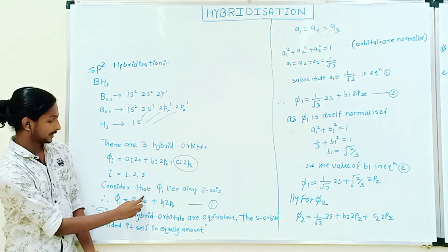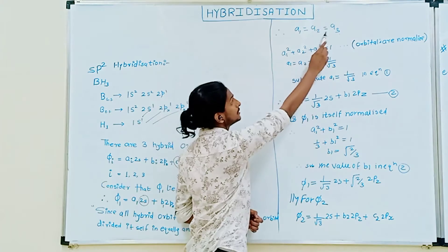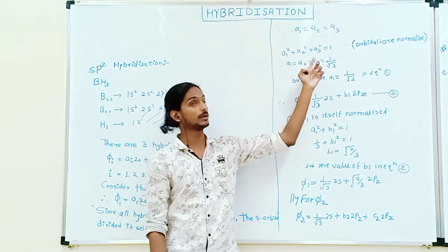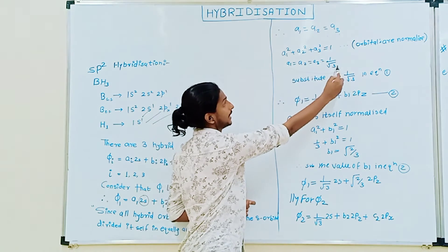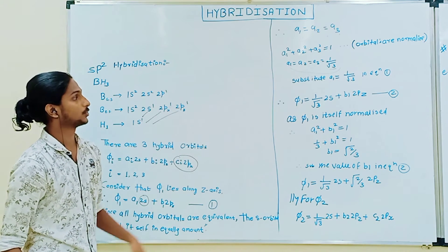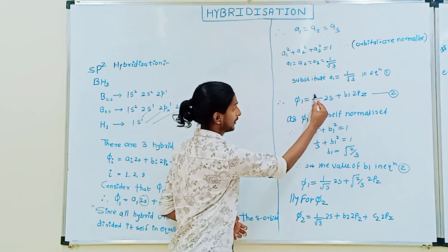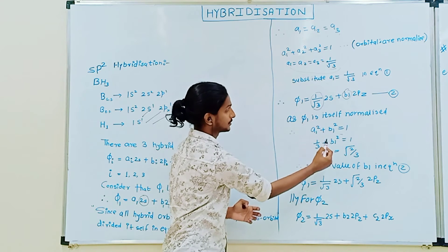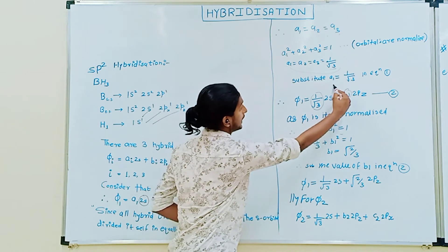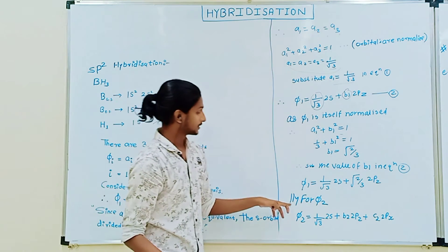The contribution from the 2s orbital will be evenly distributed since the s orbital is spherically symmetrical, so A1 equals A2 equals A3. Since the s orbital is normalized, A1² + A2² + A3² = 1, giving A1 = 1 by root 3. Substituting this value into equation 1 gives phi1 = (1/√3)·2s + B1·2pz. Since phi1 is itself normalized, A1² + B1² = 1, giving B1 = √(2/3). Substituting both A1 and B1 into equation 1 gives the wave function phi1.